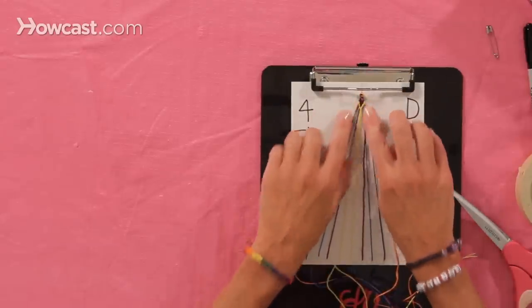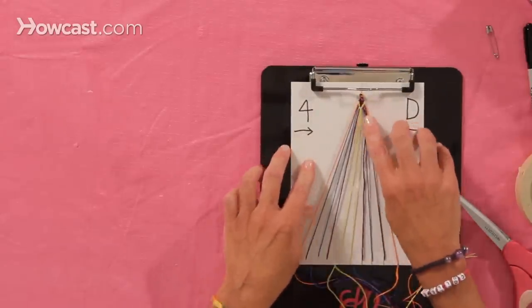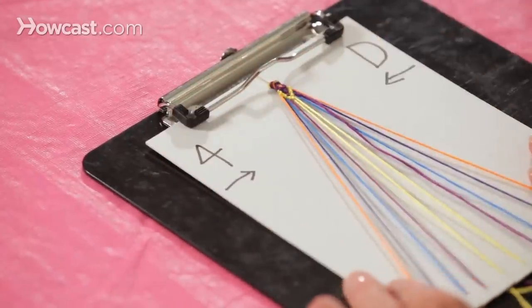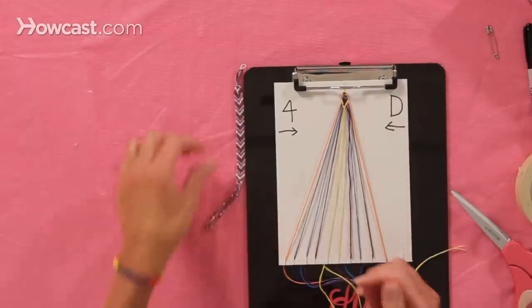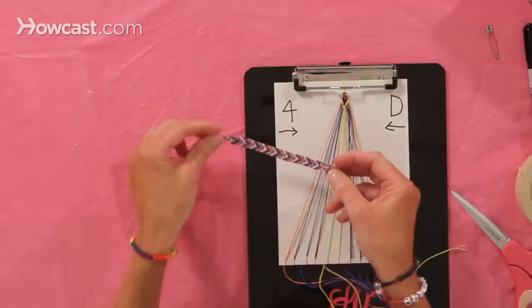And now you can see at the top how our V pattern is starting to come into play right there. So if you continue working on your V bracelet, you'll make it long enough to fit your wrist. This is what the bracelet looks like when it's completed.